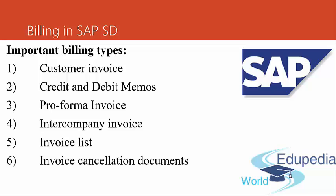In SAP, several types of billing documents exist through different business processes. The billing type determines the kind of billing document that is created. We will now discuss some of the major document types and business scenarios where they are used. The first billing type is the customer invoice. You can invoice the customer for services rendered or items delivered using regular invoices. Billing type F1 is defined for order-related billing, and F2 is defined for delivery-related billing.